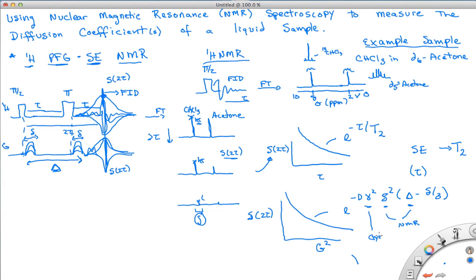This is the gyromagnetic ratio, and it is a constant of the nucleus that you're looking at. In this case it's typically proton.